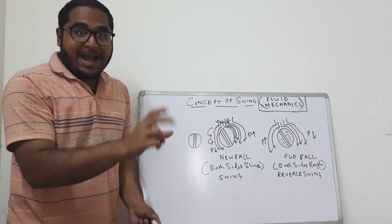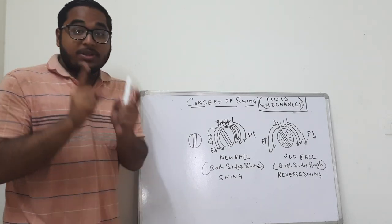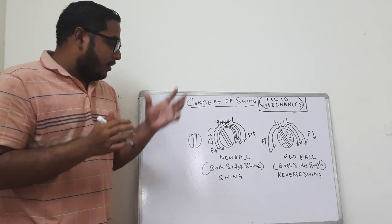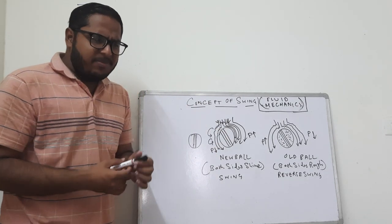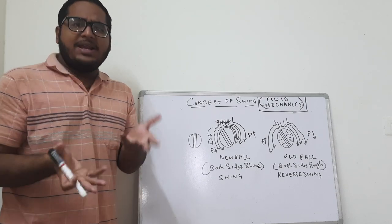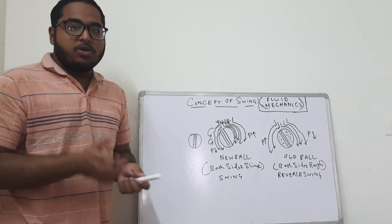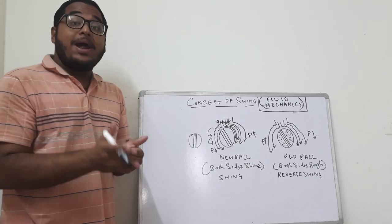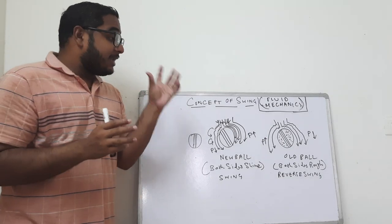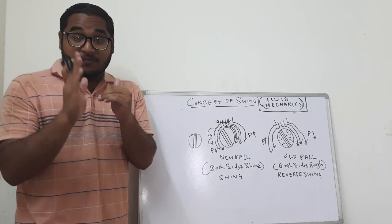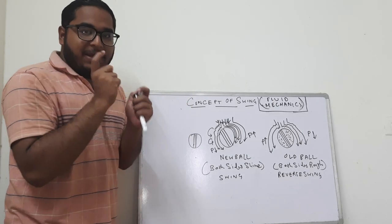How does ball swing actually work? With a new cricket ball, when both surfaces of the ball are shiny, how does the seam play a role in swing? And how does an old ball play a part when it comes to swing? We've heard about the Australia ball-tampering controversy, where David Warner and Steve Smith got banned for tampering the ball.